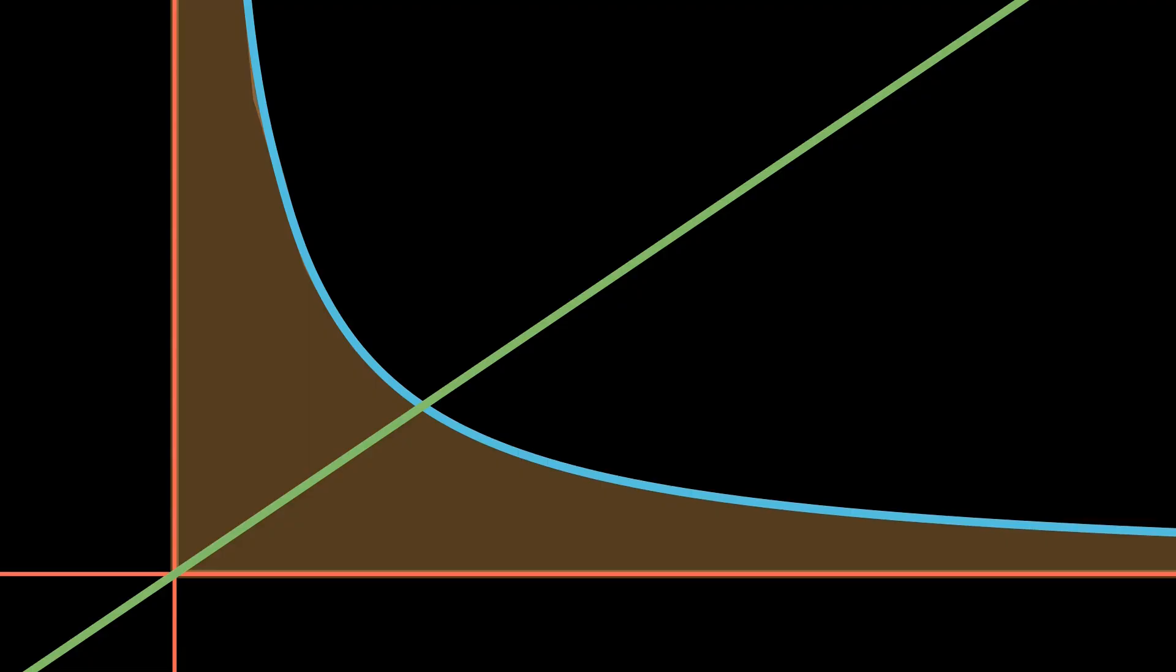Critically, this means that the area we are focusing on, the area under the curve y equals 1 over x, is split perfectly in half by the line y equals x. Therefore, the area up and to the left, which we'll call A1,